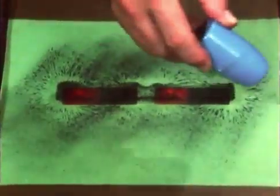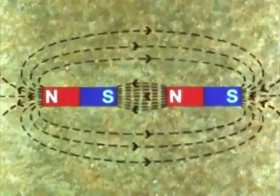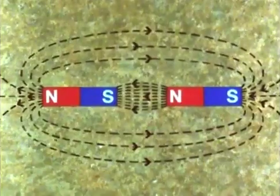The iron filings demonstration makes this clear. When unlike poles are together, the lines of force join up into one field. It is very strong between the adjacent poles.